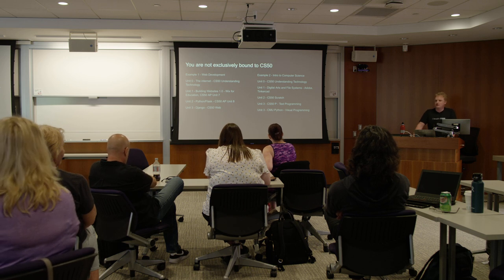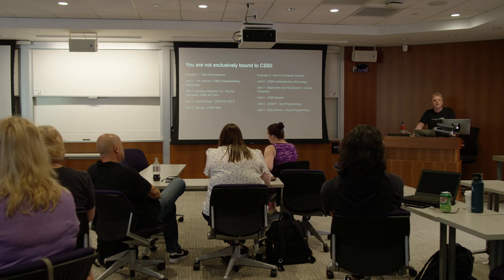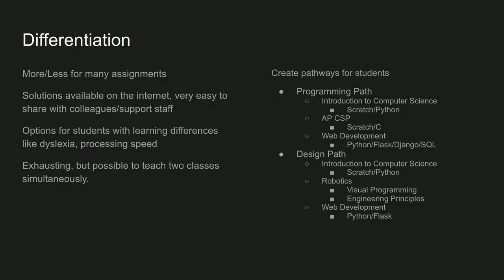Before I jump into differentiation, are there any questions, comments, or curiosities from in the classroom or from online? Okay. So these are two topics that are very important in an American school system — speaking from an American perspective. We have something called IEPs and 504s, but we also all have students who have different learning differences. The CS50 curriculum provides a lot of benefits to that. Now with this AI tool that was introduced an hour or two ago, it's going to be a game changer in terms of kids being able to work independently.